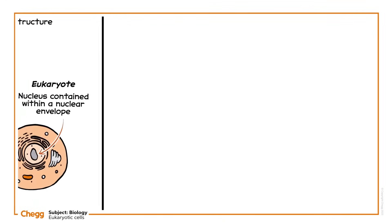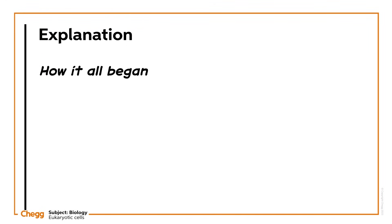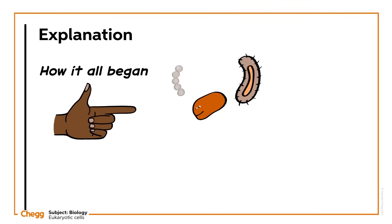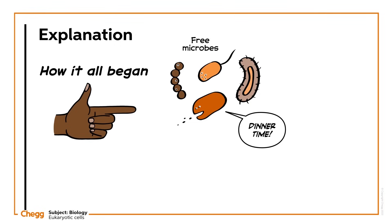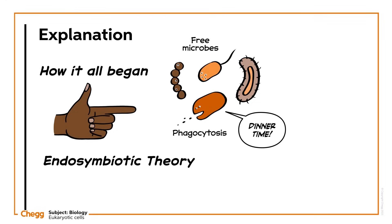Here's how it all began. It's thought that prokaryotes were amoeba-like organisms that lived freely as microbes and they obtained their nourishment through engulfing particles in a process known as phagocytosis. According to the so-called endosymbiotic theory, these phagocytic prokaryotes evolved into eukaryotes.